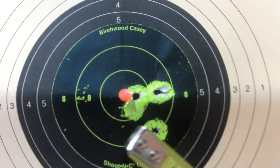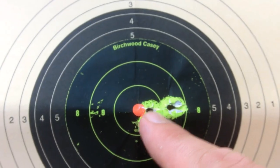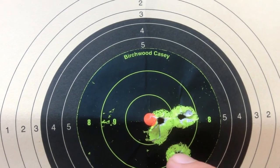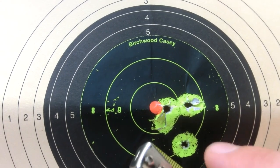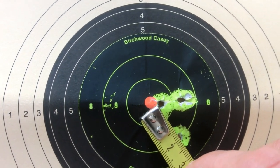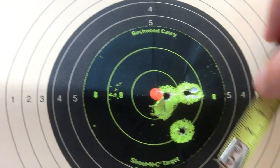The second and best group, with 2 shots basically punching through the same hole. 2.5 centimeters, 1 inch.